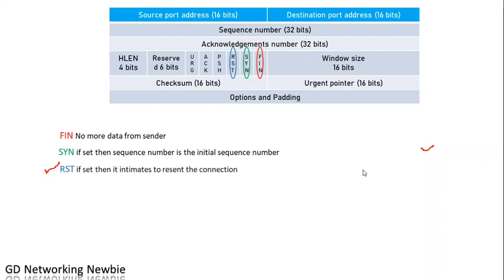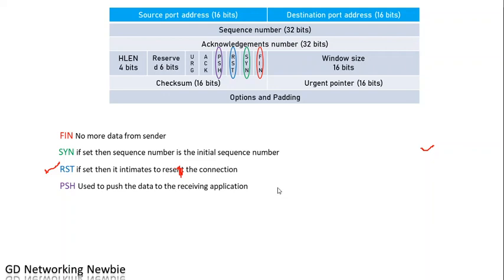Reset (RST) is a flag — if this is set, it initiates a reset of the connection. It is used to reset the connection. Then the PSH (push) flag is used to push the data to the receiving application. When the push flag is set, you push that data to the receiving application.